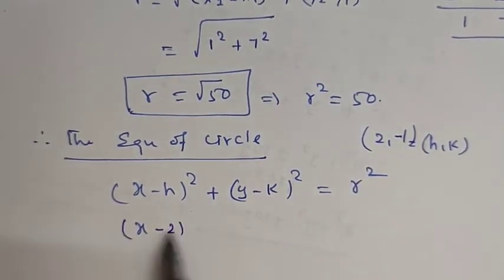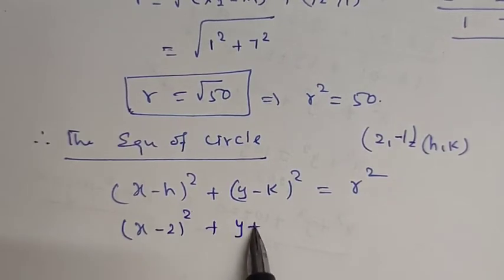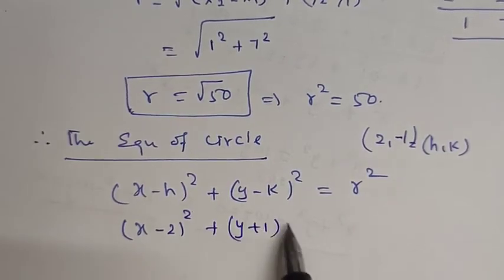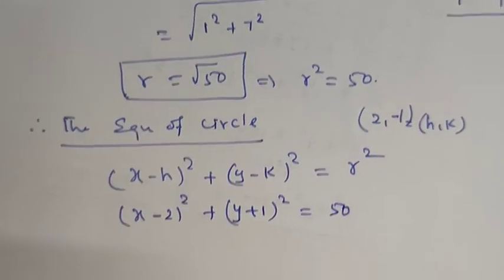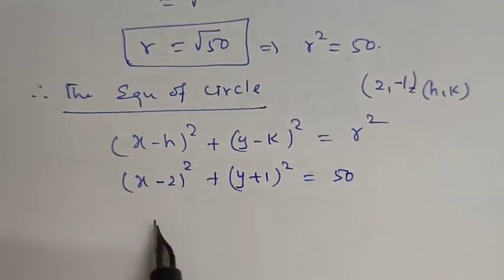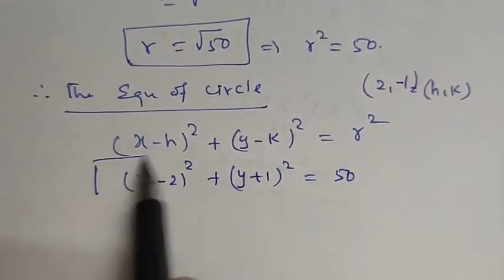So x minus 2, the whole square, plus y plus 1, the whole square, is equal to r square. The equation of the circle gives us r square equal to 50.